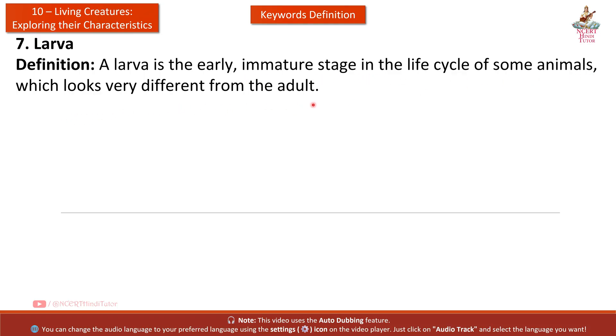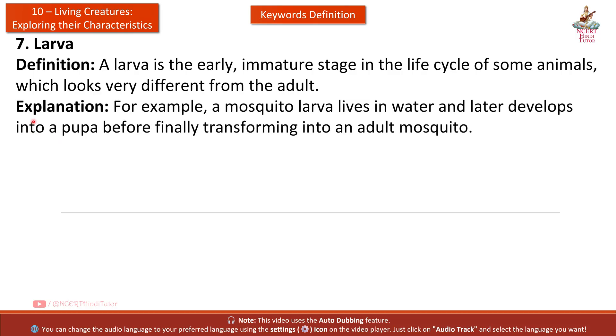Seventh: Larva. Definition: A larva is the early immature stage in the life cycle of some animals, which looks very different from the adult. Explanation: For example, a mosquito larva lives in water and later develops into a pupa before finally transforming into an adult mosquito.